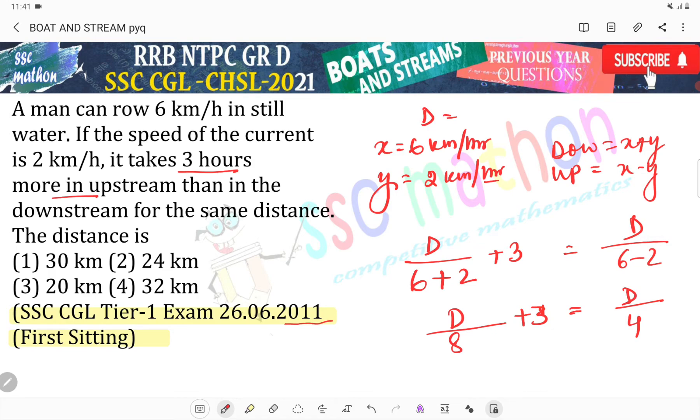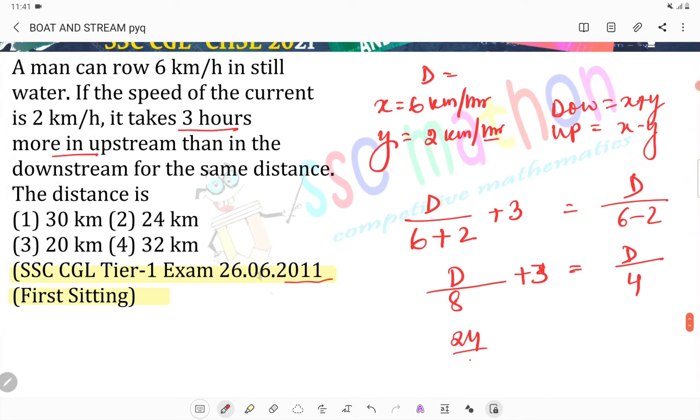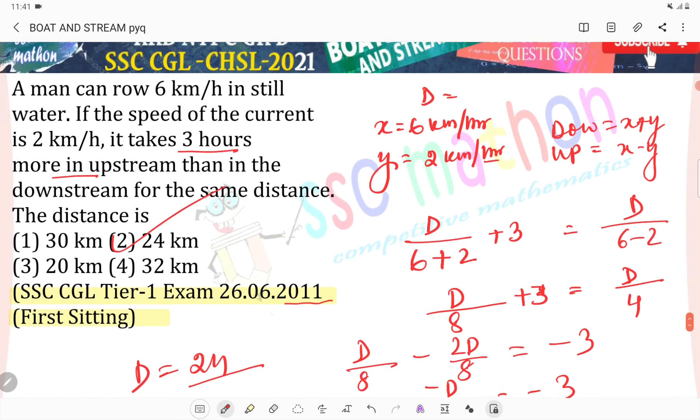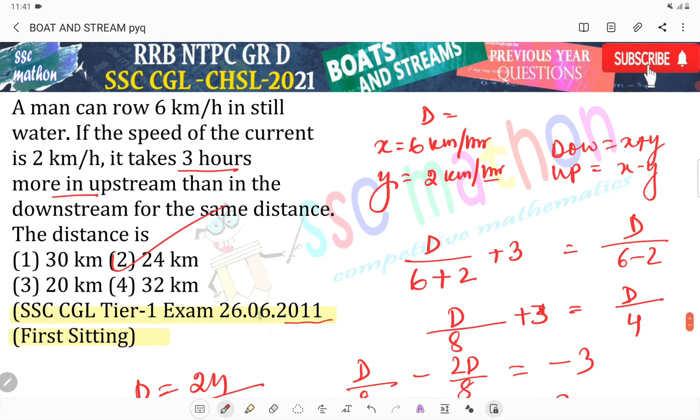If we put 24, the answer is correct. Let's solve: D divided by 8 minus 2D divided by 8, multiply by 2, equals minus 3. So minus D divided by 8 equals minus 3, therefore D equals 8 times 3, which is 24. 24 kilometers is the correct answer.